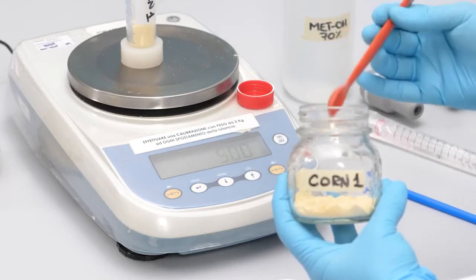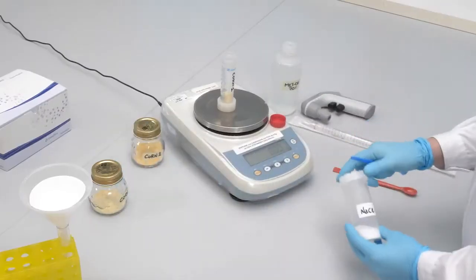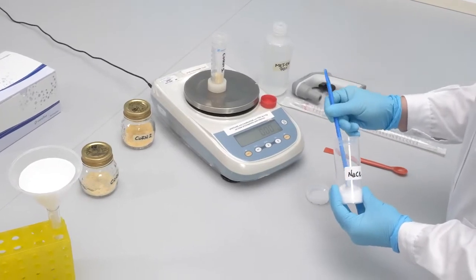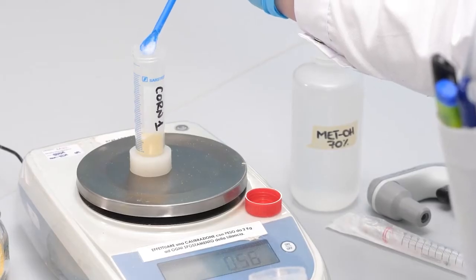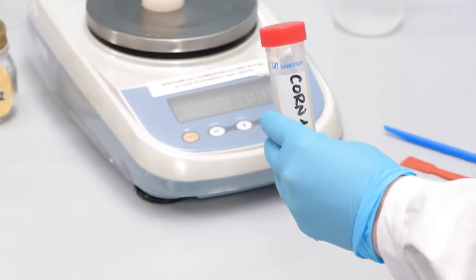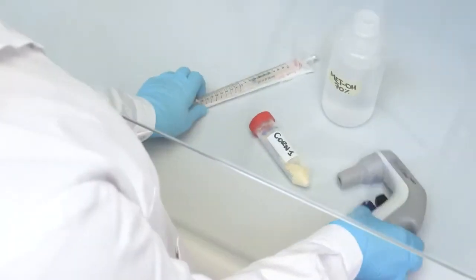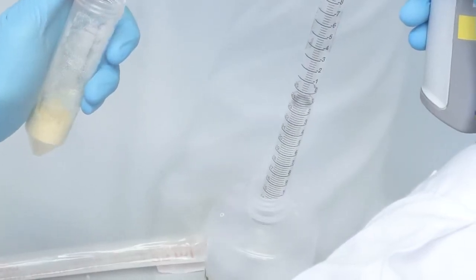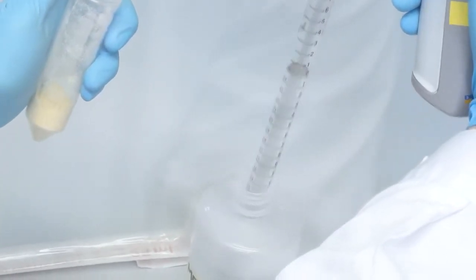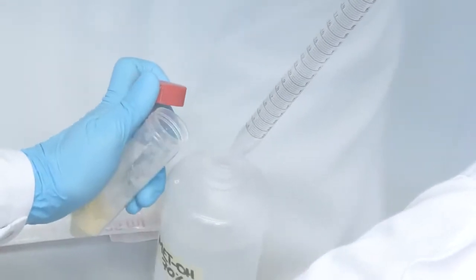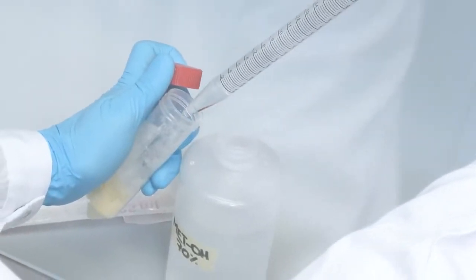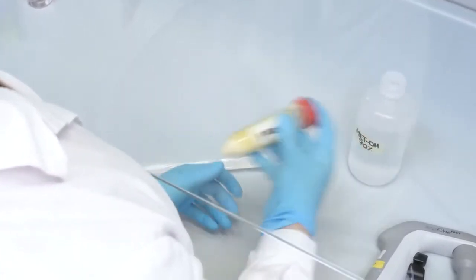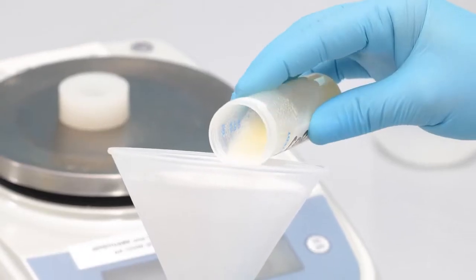For maize analysis, 5 grams of ground material are extracted in 25 milliliters of 70% methanol, 4% sodium chloride for 3 minutes. The sample is then filtered with Whatman 1 filter.